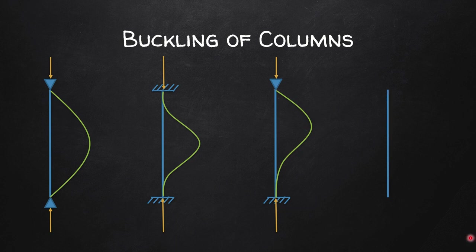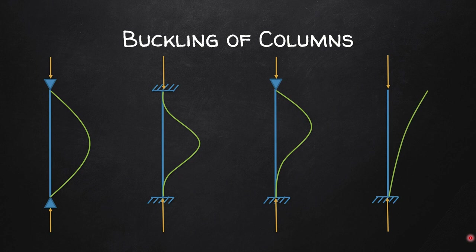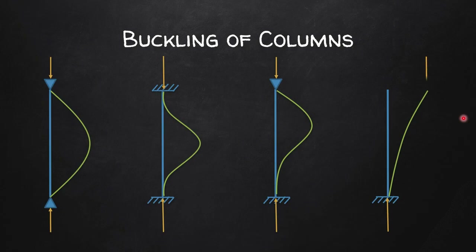For the last case, the top is free and the bottom is fixed. Applying a compressive load, buckling occurs like this. It is important to understand that once buckling happens in this direction, the column's position shifts. Therefore, the load also shifts from its original position — shown moving from the blue part to the green part in this figure.